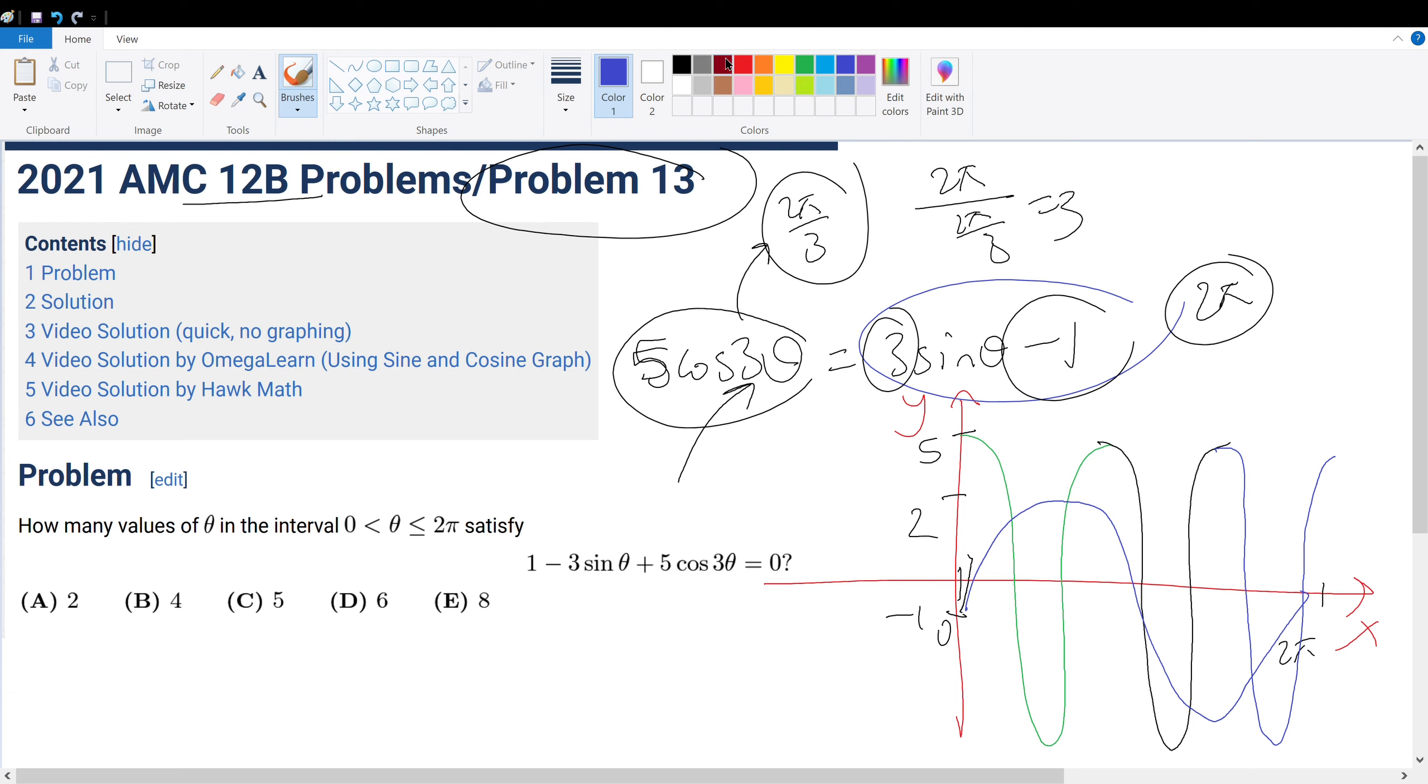And then let's see how many intersections we have. We got 1, 2, 3, 4, 5, 6. So 6 intersections.